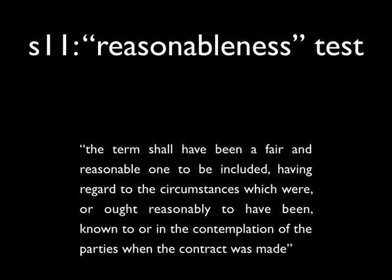As you've heard, some of the limitations imposed by UCTA are those where the term in question does not satisfy the requirement of reasonableness. At section 11, UCTA sets out the reasonableness test, and it is a general one. The test of reasonableness is whether a term shall have been a fair and reasonable one to be included, having regard to the circumstances which were or ought reasonably to have been known to or in the contemplation of the parties when the contract was made. The burden of proof is on the party seeking to claim that the term in question meets the requirement of reasonableness.